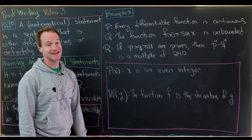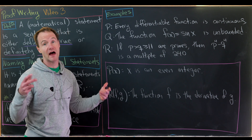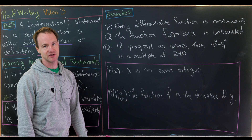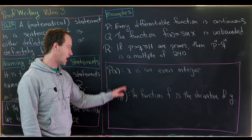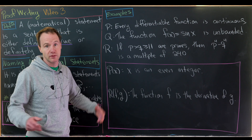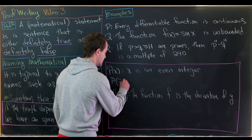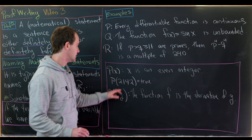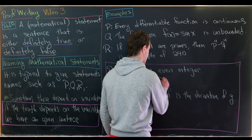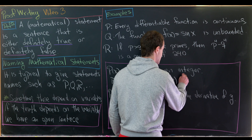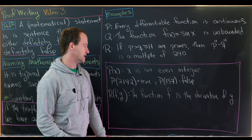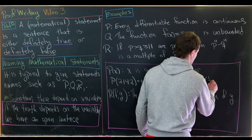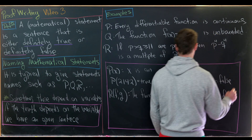Here are some open sentences, which become statements when we plug in values for the variable. Let p(x) be the open sentence 'x is an even integer.' We cannot determine the truth or falseness of this without plugging in a number. If we plug in 2142 we get a true statement since 2142 is even, but if we plug in 137 we get a false statement since 137 is not even. And if we plug in ½ we also get a false statement because ½ is not even an integer.